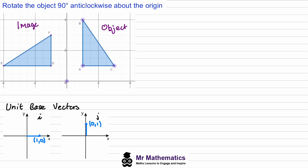To rotate the object 90 degrees anti-clockwise, we need to rotate the base vectors i and j, because whatever rotation we apply to these vectors will be exactly the same from any point on the grid. If we rotate i by 90 degrees anti-clockwise it lands at coordinates (0, 1), and if we rotate j 90 degrees anti-clockwise about the origin it lands at coordinates (-1, 0).